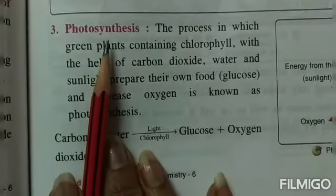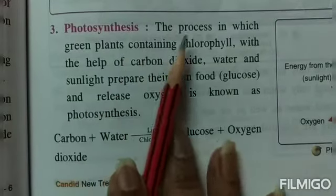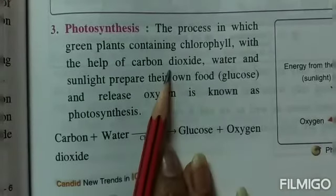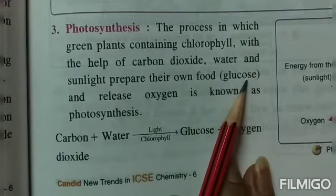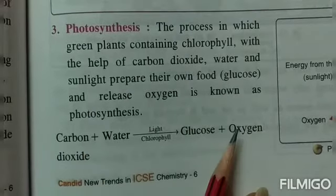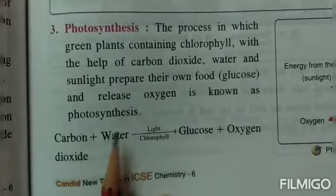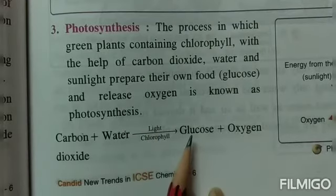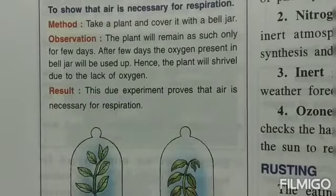Photosynthesis is the process during which green plants containing chlorophyll, with the help of carbon dioxide, water, and sunlight, make their own food — that is glucose — and as a result, oxygen is released. In the word reaction for photosynthesis: carbon dioxide combines with water in the presence of sunlight and chlorophyll to produce glucose (food) and release oxygen.